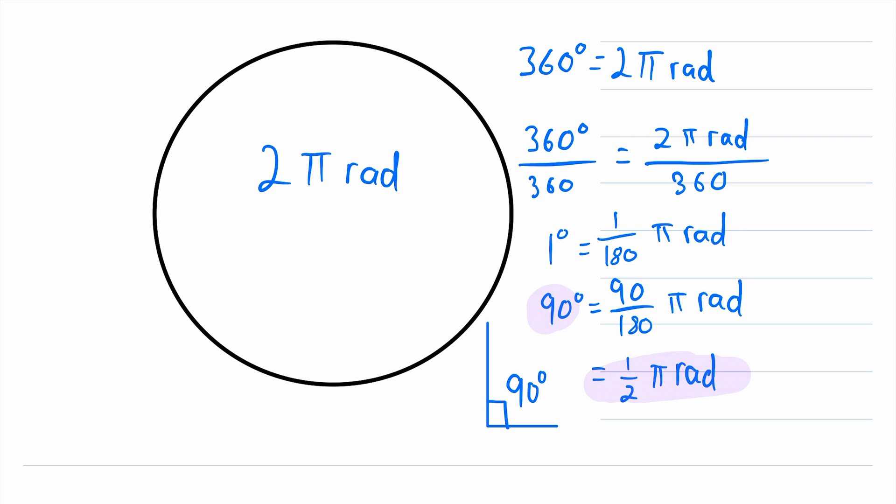And of course, we usually leave radians in terms of pi. And again, this is the conversion, whatever number of degrees you have to convert it to radians, just multiply that number by one over 180 pi. And that is the number of radians.